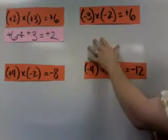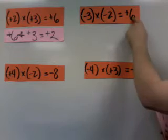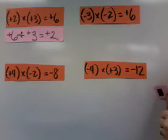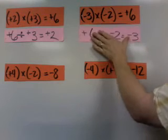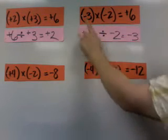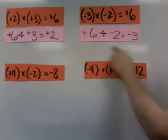All right, so what would we do over here? Well, this is a positive 6. That's the answer. And so we're going to do positive 6 divided by negative 2 equals negative 3, right here.